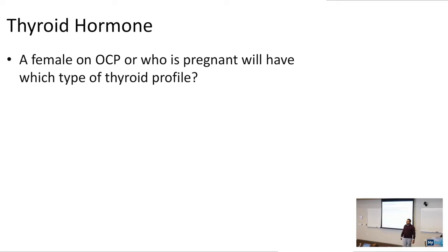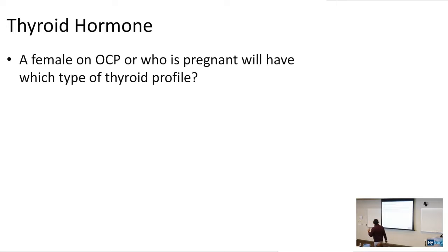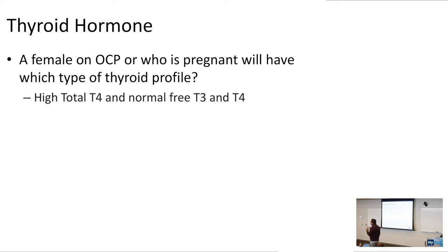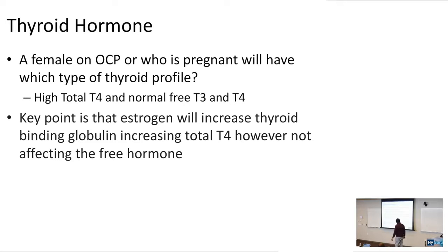If you are taking oral contraceptive pills or are in a high estrogen state, your thyroid profile is going to show an increase in total T4. However, you have a normal free T3 and a normal free T4. OCPs and pregnancy increase total T4 levels because estrogen increases thyroid binding globulin, increasing total T4, but not affecting the free hormone. The free hormone is the only hormone important for feedback regulation.